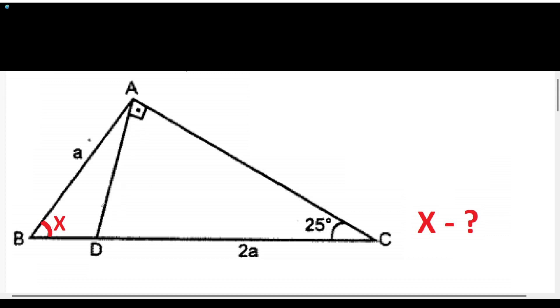So let's get started. We have to find X, and we know that the angle will be the sum of two other interior angles, so 90 degrees plus 25 degrees, and it will be 115 degrees.